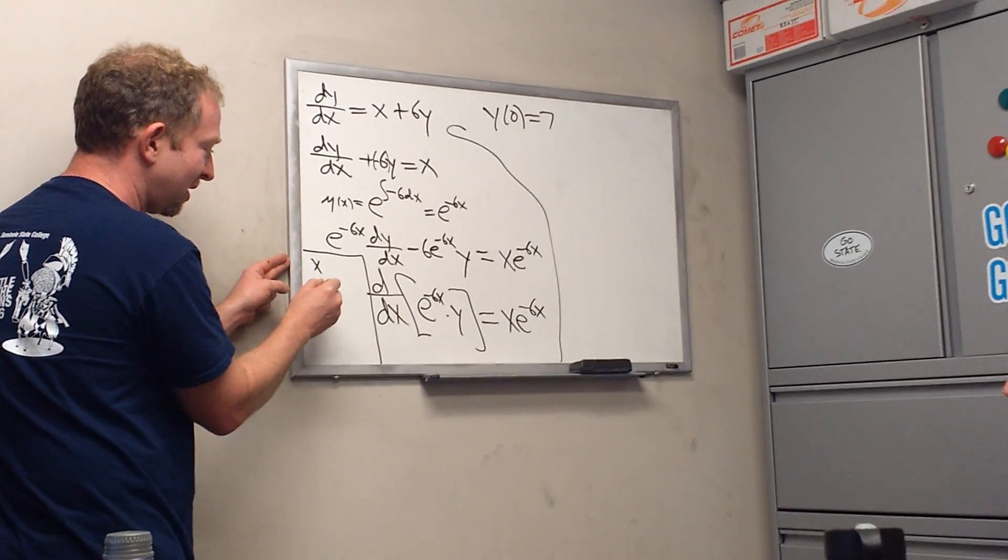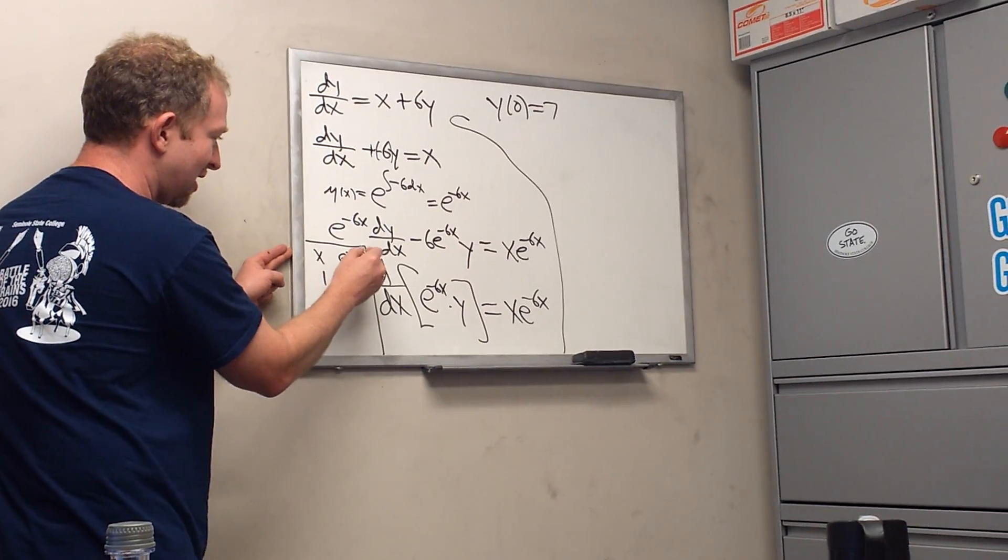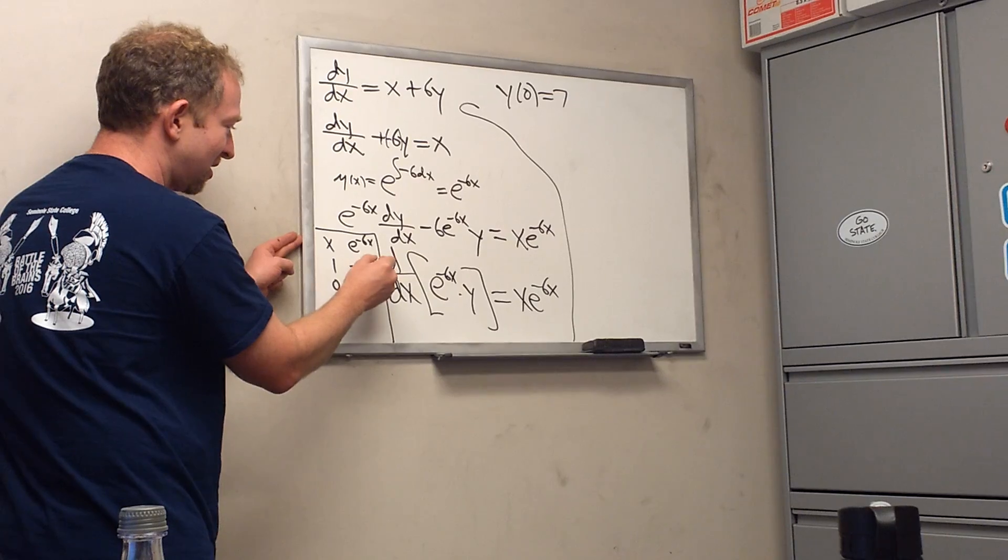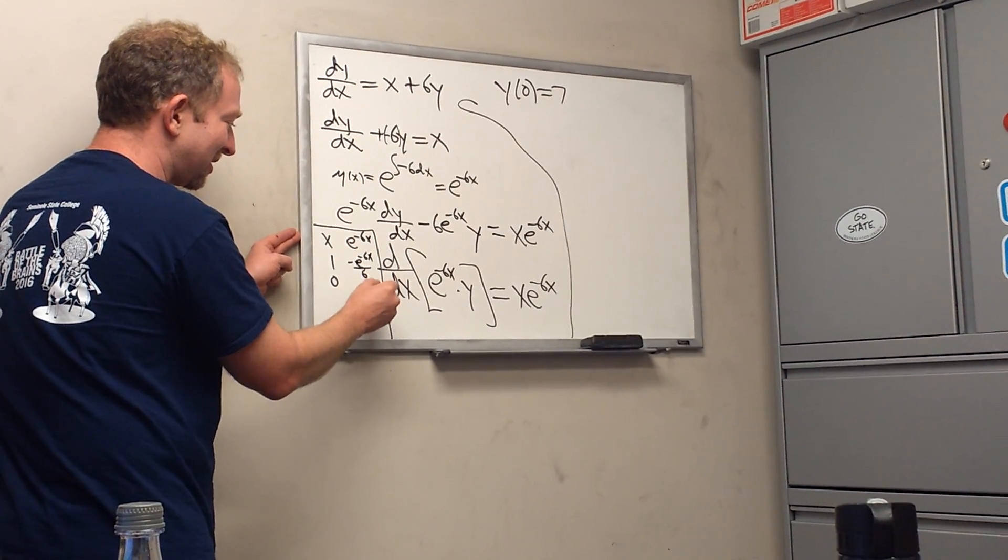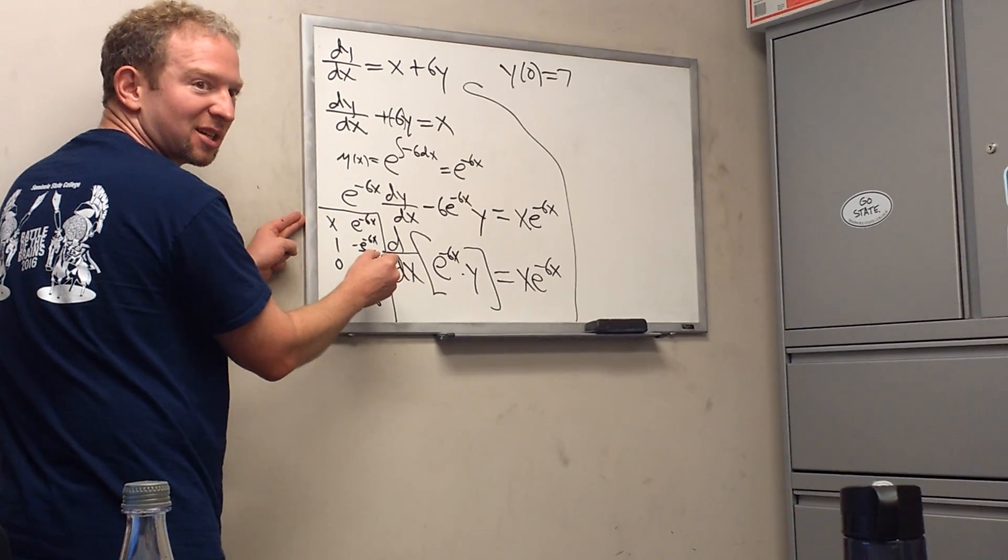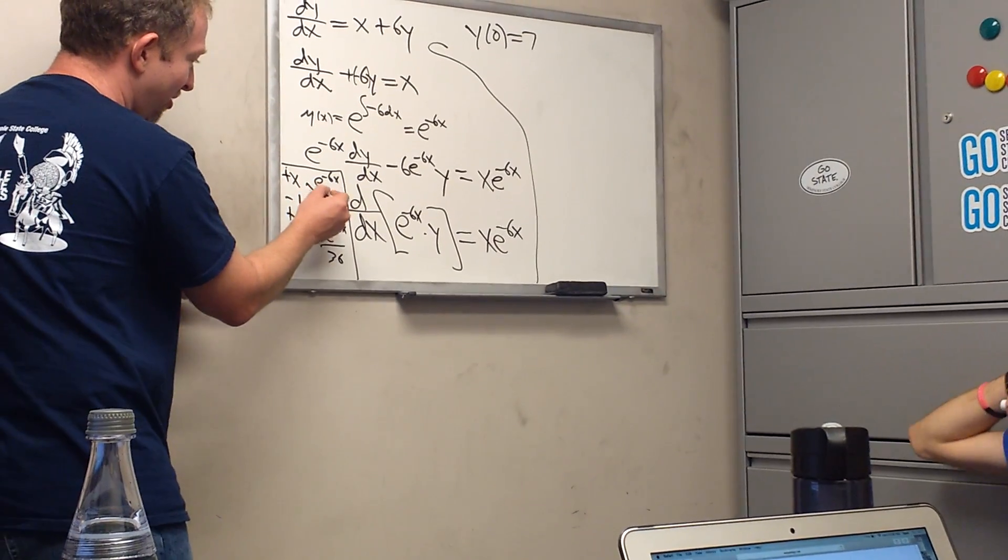So x. 1. 0. And then e to the negative 6x. And then divide by negative 6. So negative e to the negative 6x over 6. And then e to the negative 6x over 36. Yeah, because 6 times 6 is 36, right? And it's positive. Yeah, it's positive. Plus, minus, plus. And then the arrows.